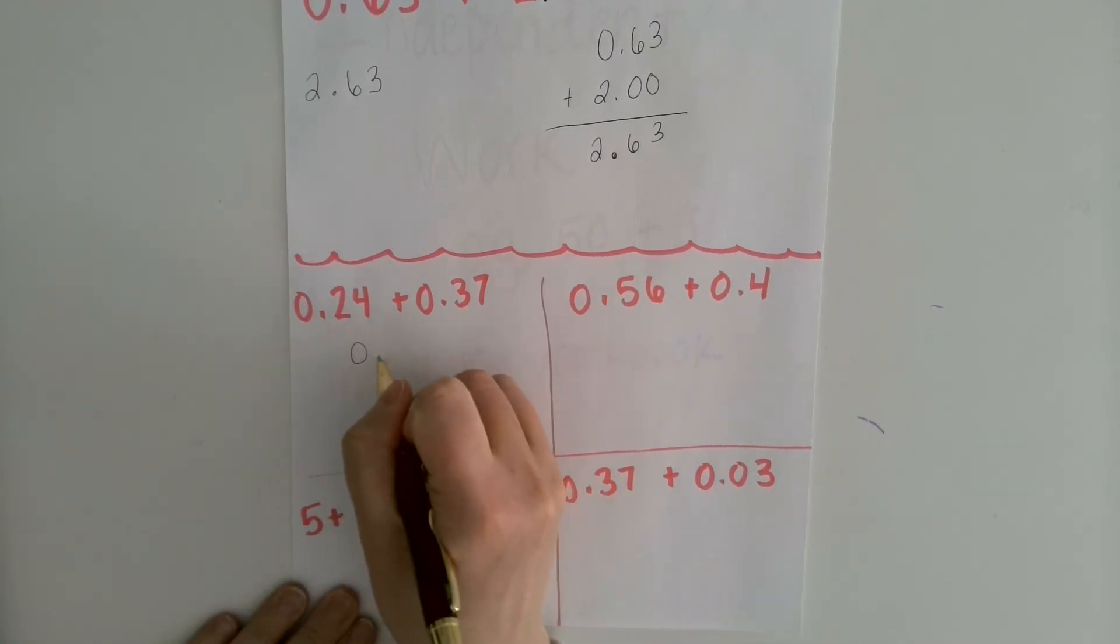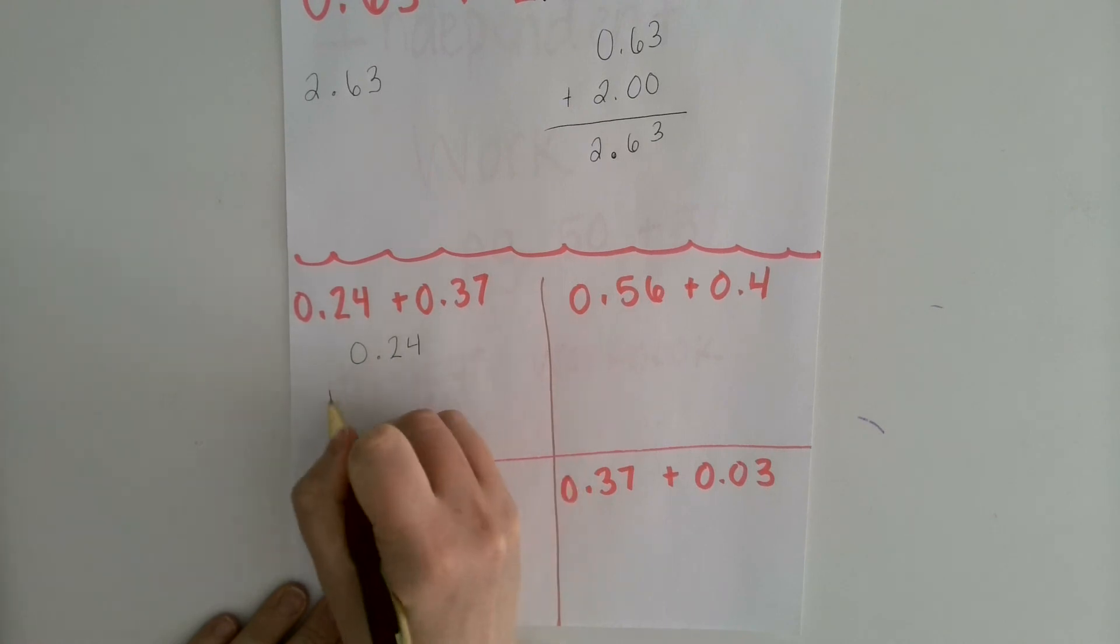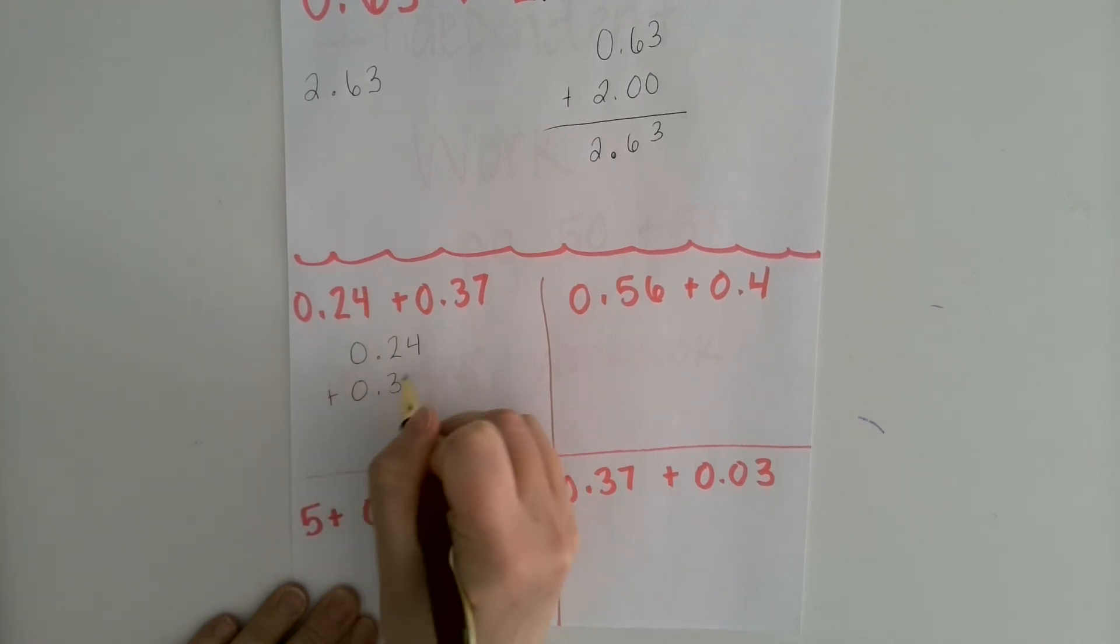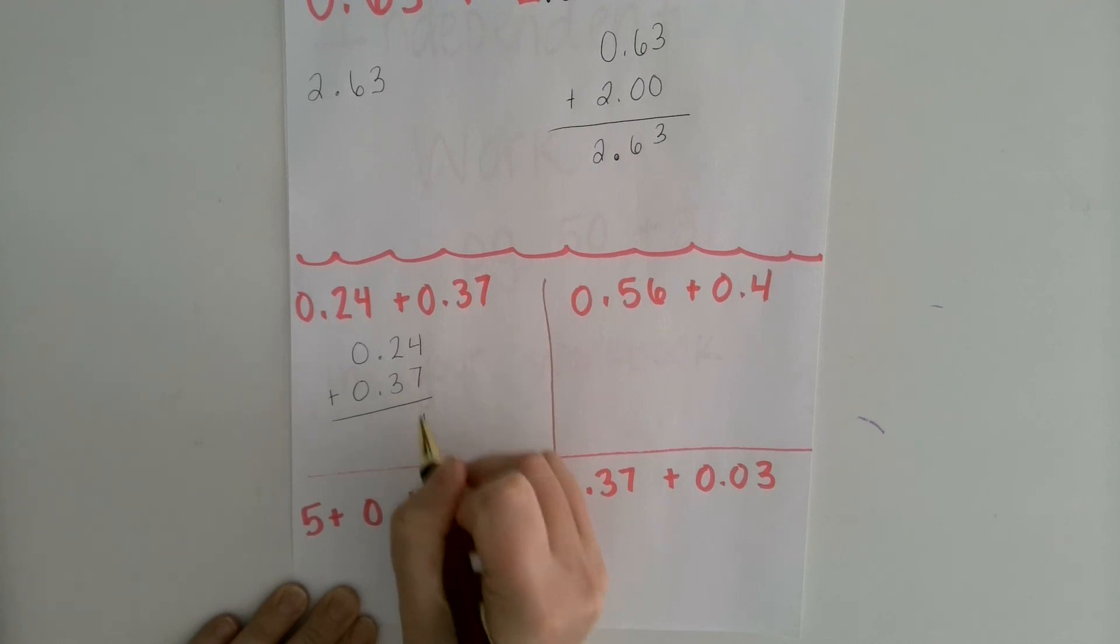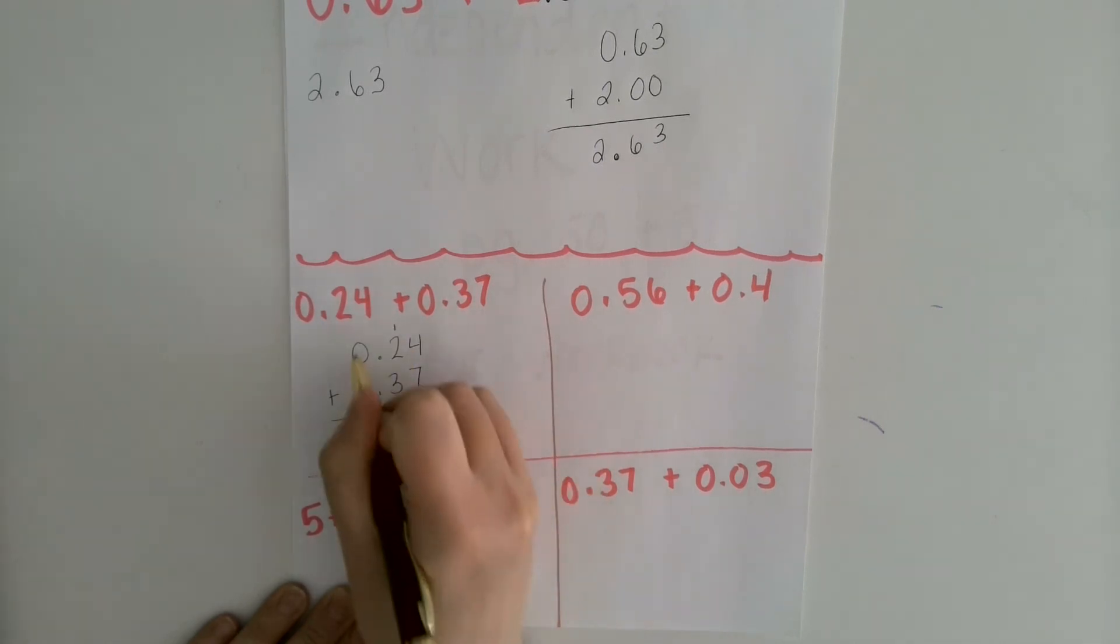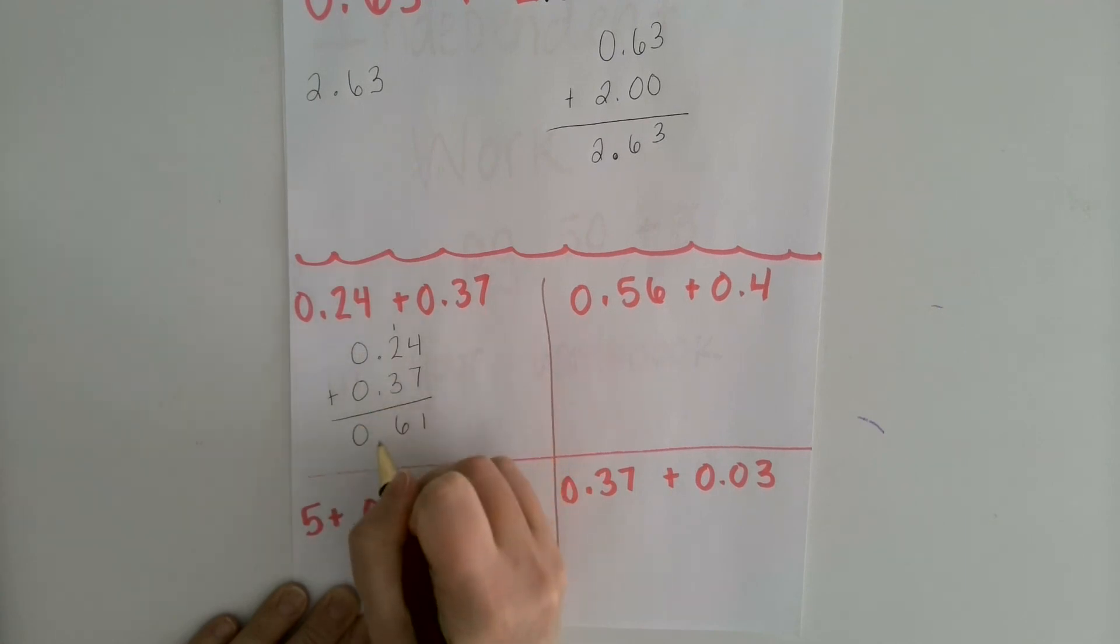So this is a straightforward one because they both have the same number of places past the decimal. 4 plus 7 is 11. So bring the one over. 3 plus 2 is 5. This one is 6. 0 plus 0 is 0. Bring that decimal straight down. So you should have 0.61.